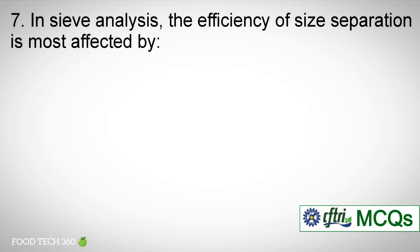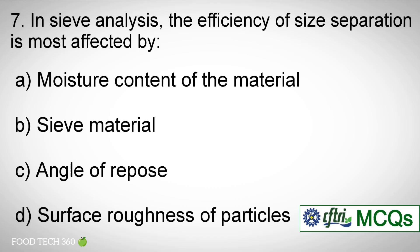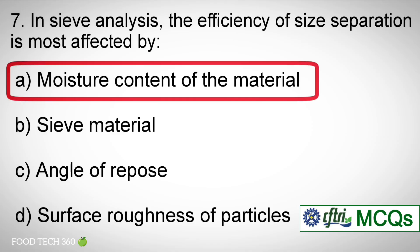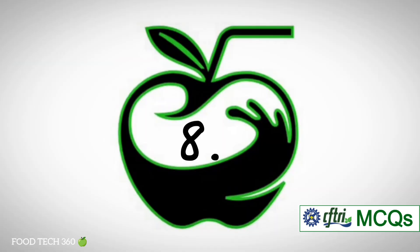Question number 7: In sieve analysis, the efficiency of size separation is most affected by — A. Moisture content of the material. B. Sieve material. C. Angle of repose. D. Surface reference of particles. Correct answer: A — Moisture content of the material.